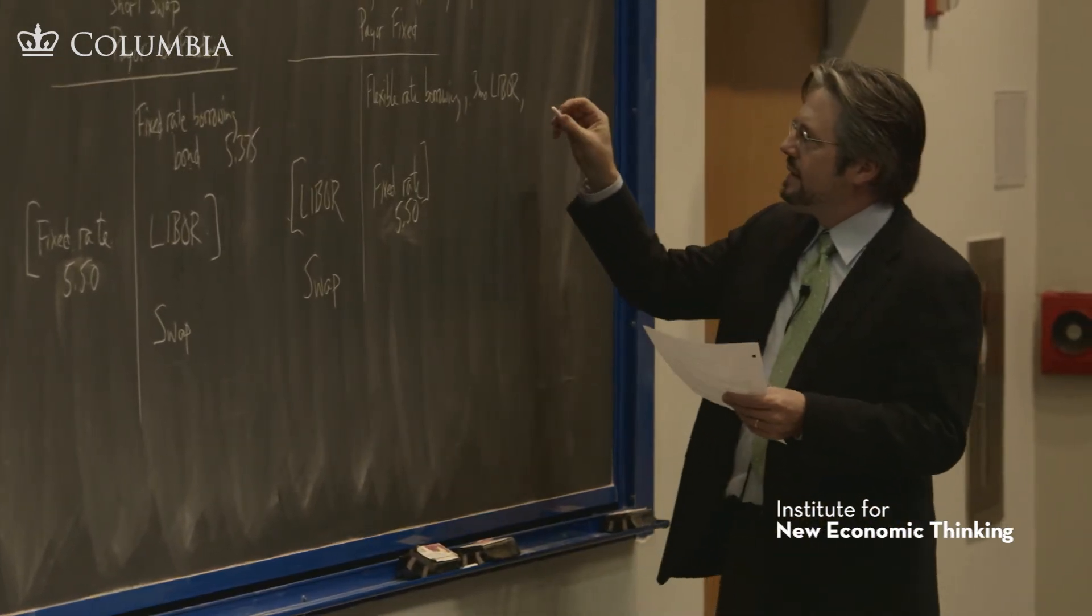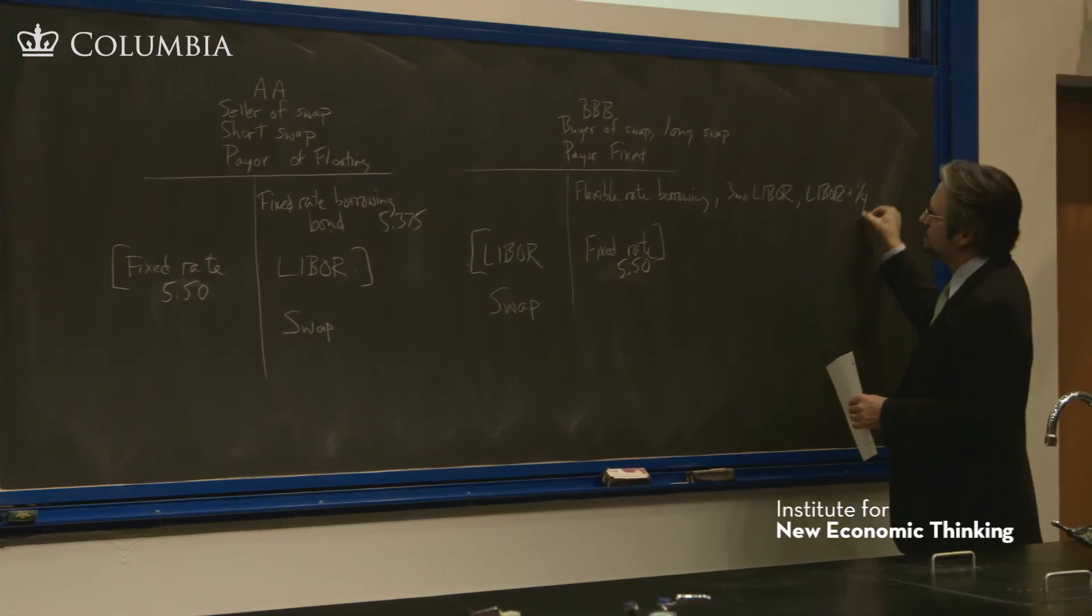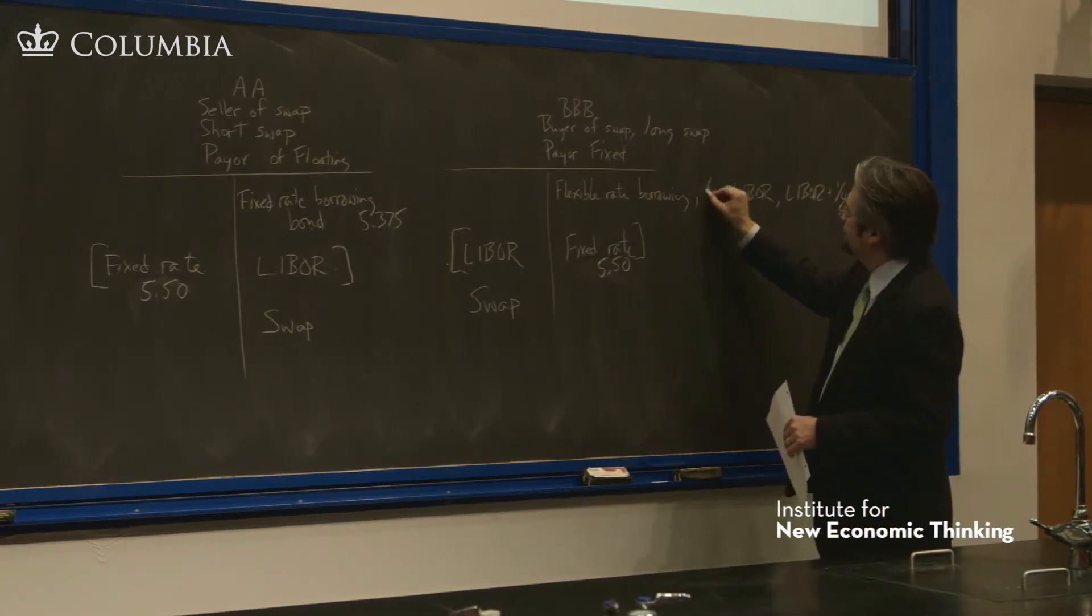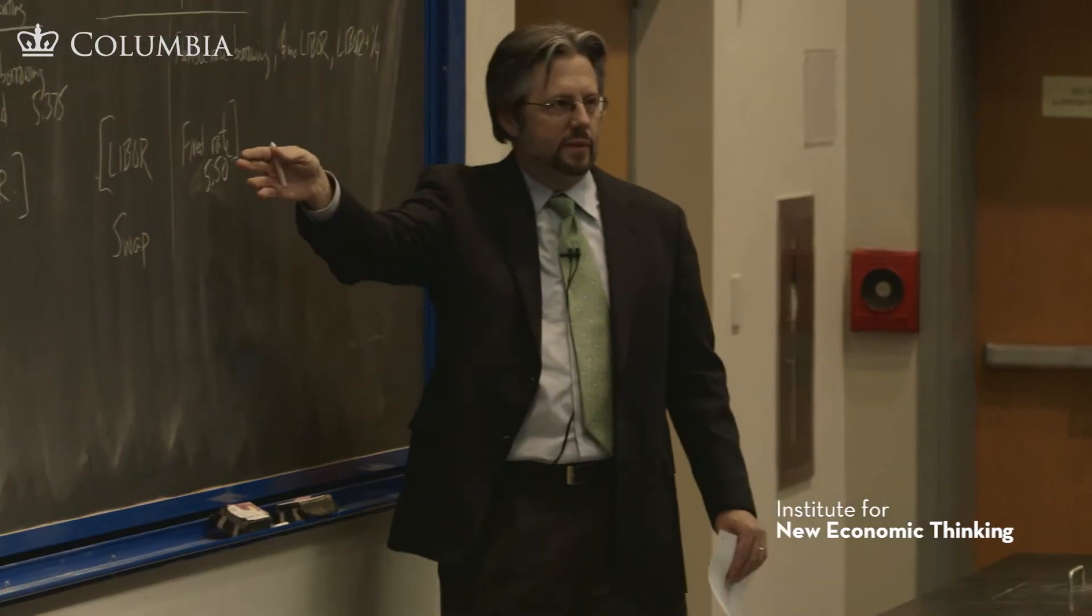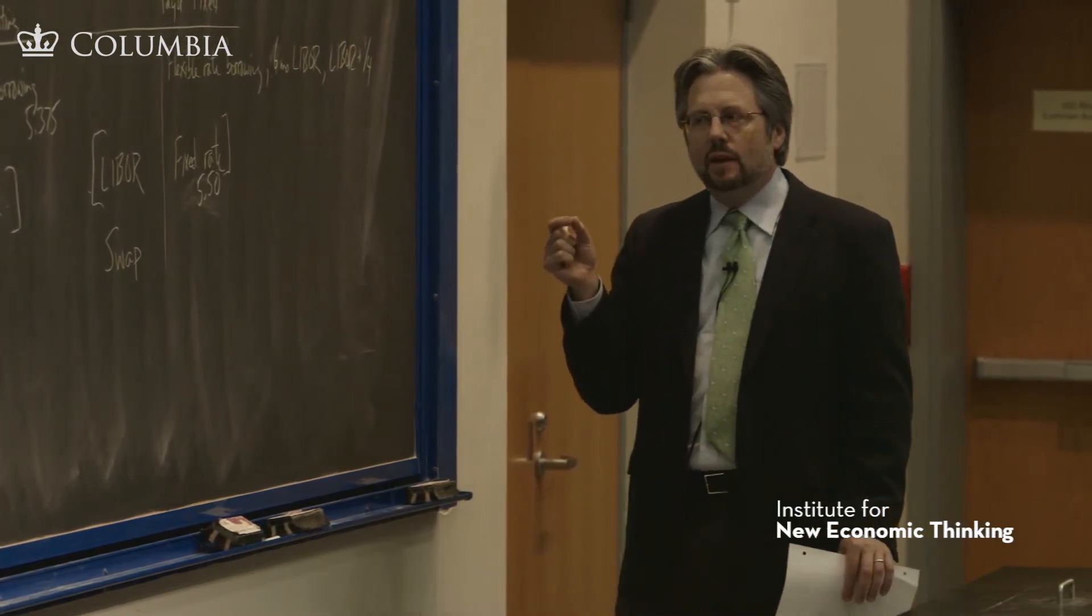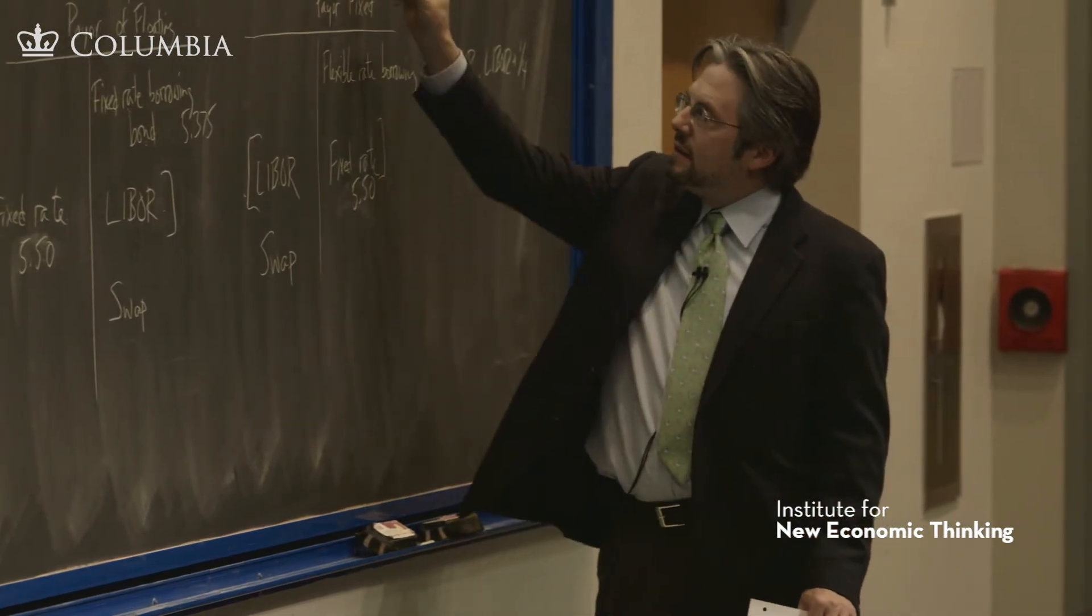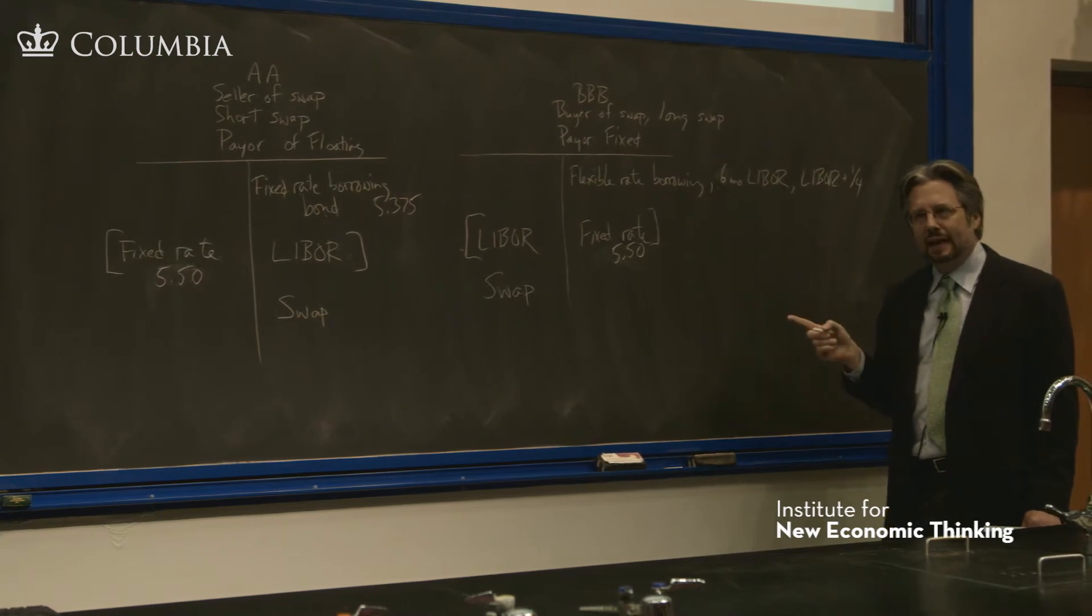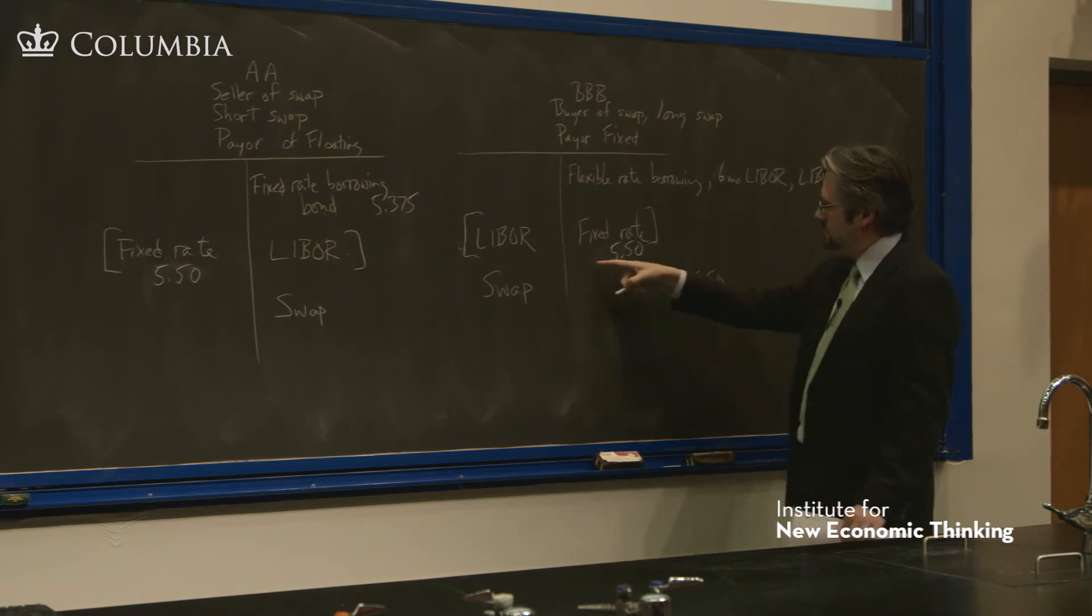We're assuming this is LIBOR plus one quarter from that, except that it's six-month LIBOR so it lines up with the swap here. What is the result of all this? Triple B achieves fixed rate funding. What are they actually paying for that fixed rate funding? They're paying 5.50% absolutely.